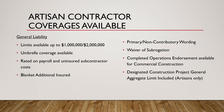For general liability, coverage limits are available up to 1 million / 2 million on the primary policy. Umbrella coverage is available. It's rated on payroll and uninsured subcontractor costs. Blanket additional insureds are available, along with primary non-contributory wording, waiver of subrogation, and completed operations endorsements available for commercial construction — please note it's not available for most residential exposures. A designated construction project general aggregate limit is included for artisans only.